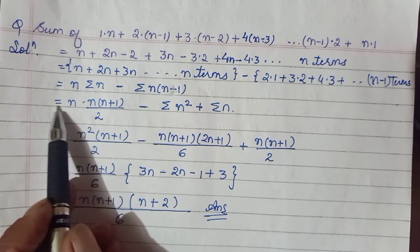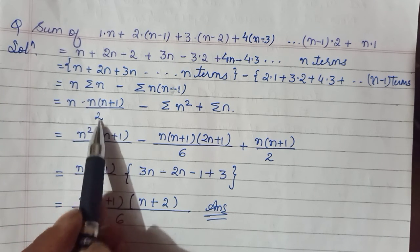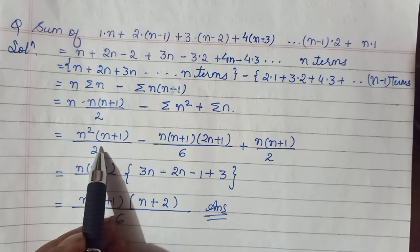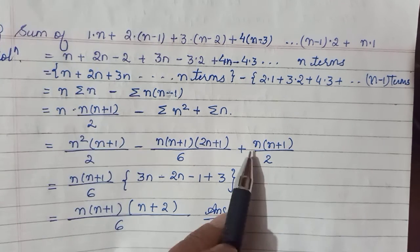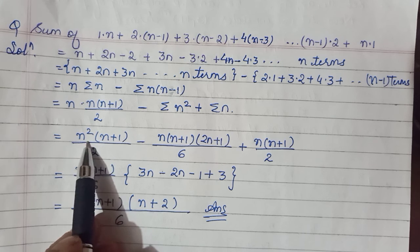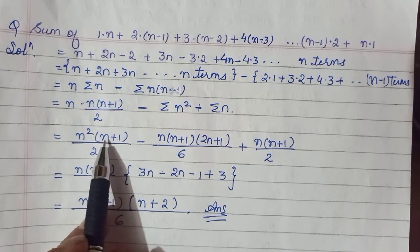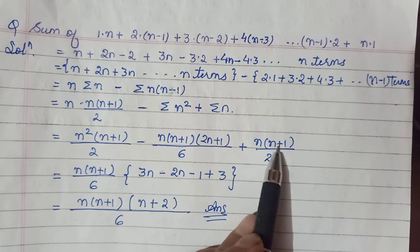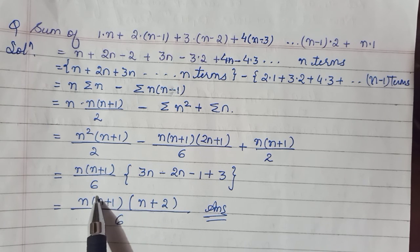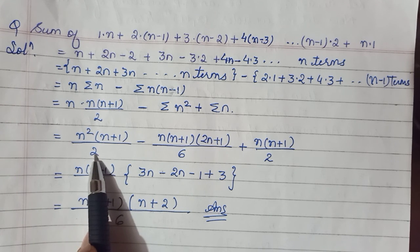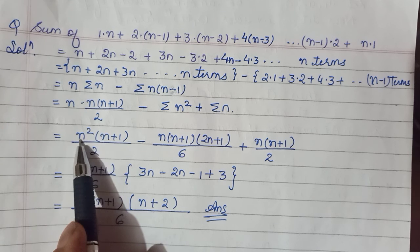And here ek n wala upar tha and yeh Σn ka formula, that is n(n+1)/2. Okay, ab saare terms, to simplify it further, we can see we have n(n+1), n(n+1), n(n+1) can be taken common. Common denominator 6 is 3 times increase. n(n+1) remained.